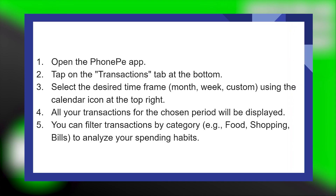Open the PhonePe app. Now, tap on the Transactions tab at the bottom. Then select the desired time frame, such as month, week, or custom, using the calendar icon at the top right.